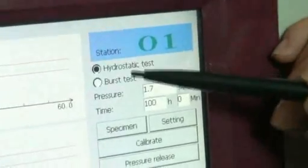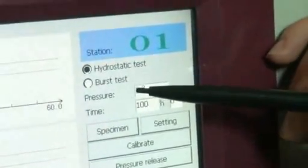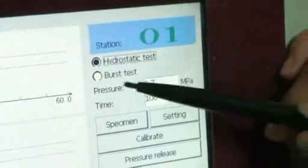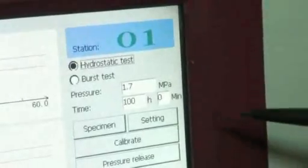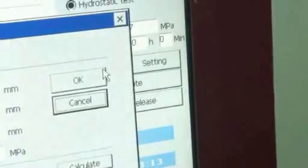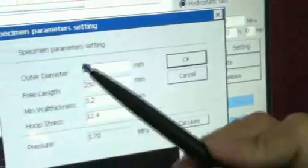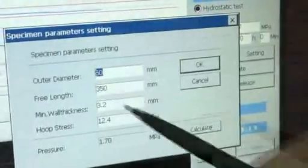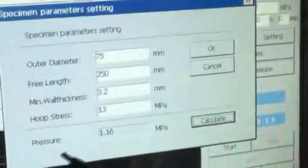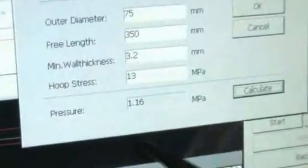Here we can select which method of testing needs to be conducted, namely hydrostatic testing and burst testing. After that we need to select the specification of the sample, for example diameter, length, etc. Based on this information the unit will calculate the system pressure automatically.